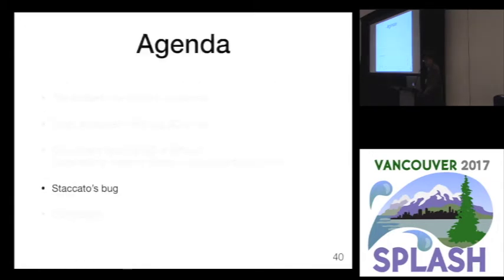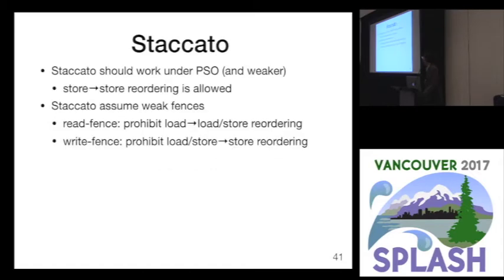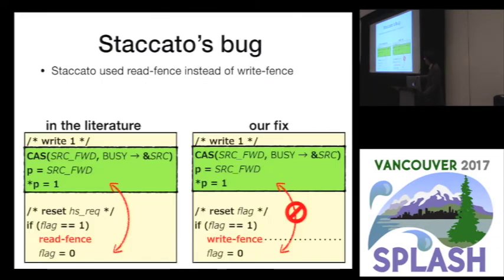Now I can explain what Staccato's bug was. Staccato should work under partial store ordering and weaker memory models, where store-store reordering is allowed. Staccato assumes weak fences — a load fence and a light fence. The load fence prohibits load-load and load-store reordering, and the light fence prohibits load-store and store-store reordering. Staccato uses a load fence here rather than a light fence, so the two stores can be reordered and the system may break. We modified this algorithm by replacing the load fence with the light fence and verified that it works correctly.